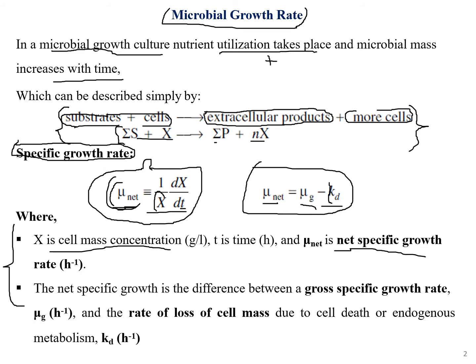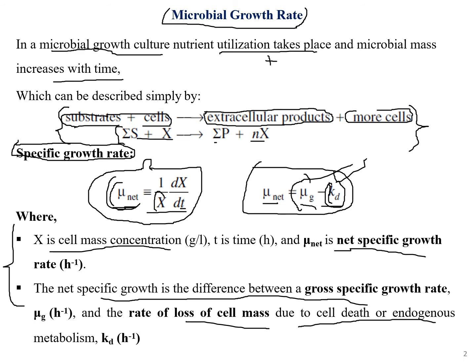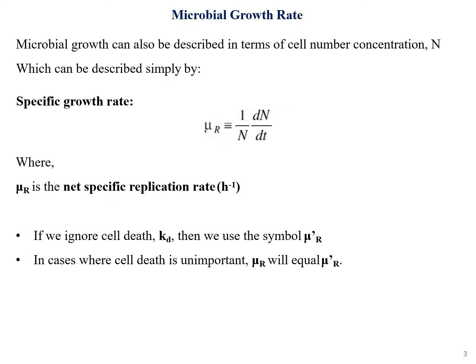The net specific growth rate is the difference between the gross specific growth rate (μ_g) and k_d, which is the death rate or the rate of loss of cell mass due to cell death or endogenous metabolism.